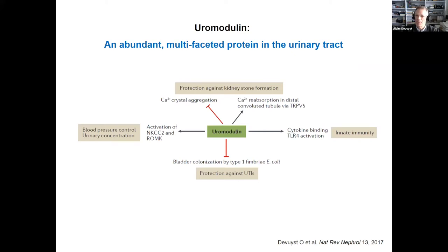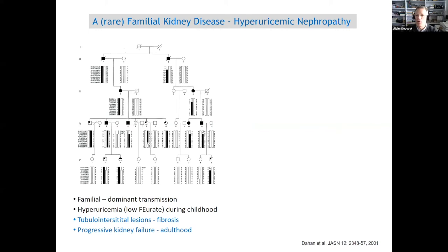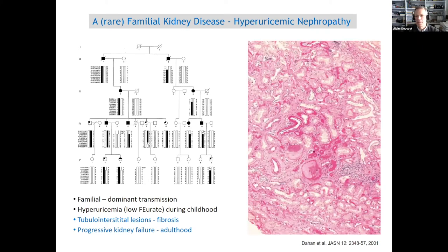Inverse correlations were observed, and studies done in the late 1980s identified uromodulin as one of the factors protecting against urinary tract infections. The boost in interest also came from genetic studies. This is one of the families we identified in Belgium about 20 years ago — a very nice dominant pedigree where individuals reach chronic kidney disease in adulthood, also characterized by hyperuricemia. There was no proteinuria, no hematuria; kidneys were normal in size, but biopsies showed tremendous tubular interstitial disease with fibrosis.